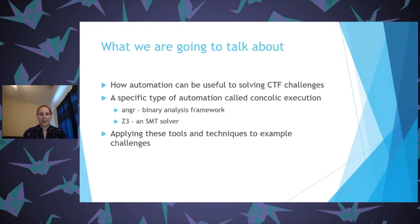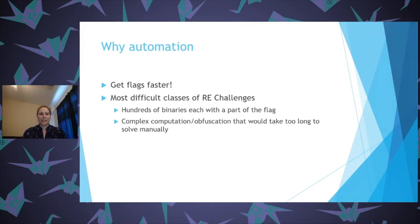We'll be applying these tools to three example CTF problems — not full walkthroughs, but focusing on how these tools can help you solve the challenge. Why automation? The simple answer is to get your flags faster so you can win the CTF. But even beyond that, some of the most difficult classes of reverse engineering challenges require automation — whether it's the scale of the problem with hundreds of binaries to analyze, or complex computation and obfuscation that would be unreasonable to solve in a weekend without automation.